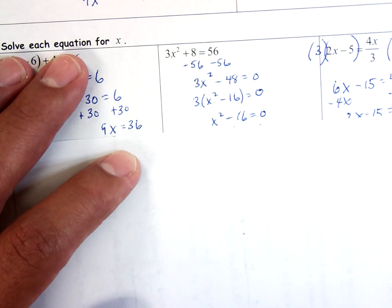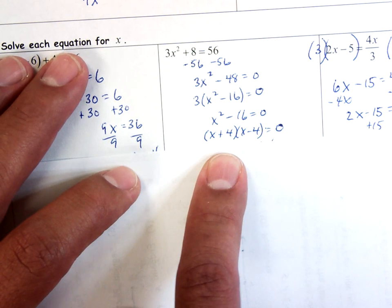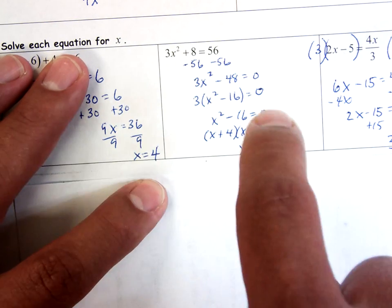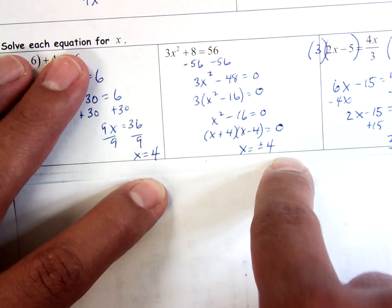We'll talk more about this one in class. I factor this, x + 4 times x - 4 and I get x equals plus or minus 4. Don't worry so much about this one, I'll talk more about this one in class.